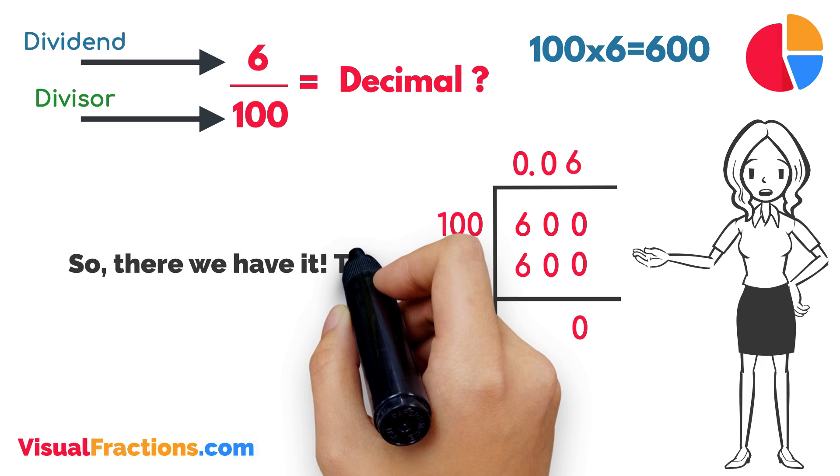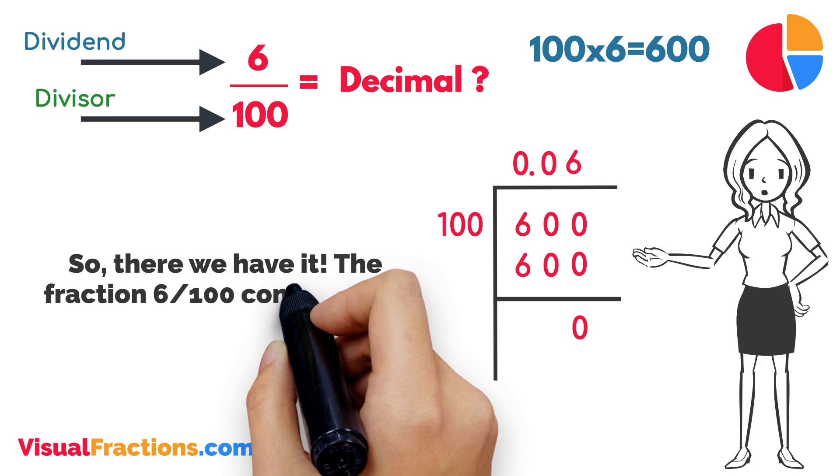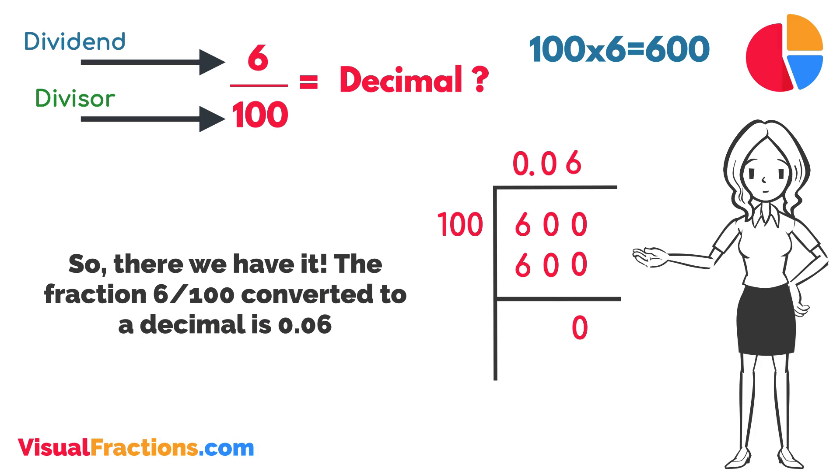So, there we have it. The fraction 6/100 converted to a decimal is 0.06. This conversion process demonstrates a straightforward method to understand and represent fractions in decimal form.